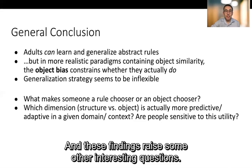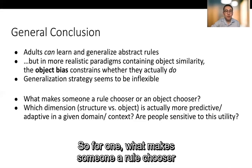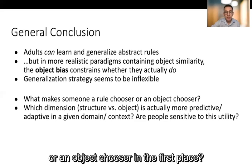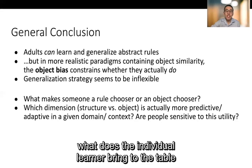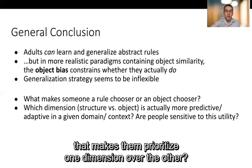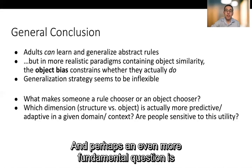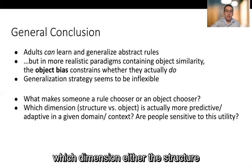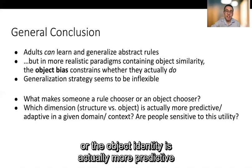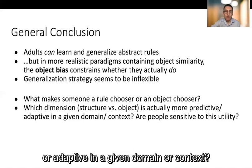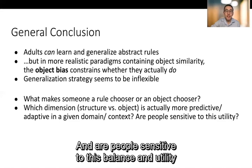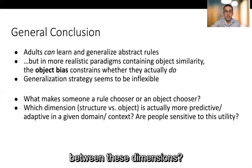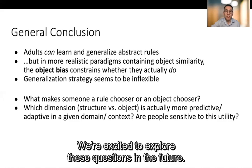And these findings raise some other interesting questions. So for one, what makes someone a rule chooser or an object chooser in the first place? In other words, what does the individual learner bring to the table that makes them prioritize one dimension over the other? And perhaps an even more fundamental question is which dimension, either the structure or the object identity, is actually more predictive or adaptive in a given domain or context? And are people sensitive to this balance and utility between these dimensions? We're excited to explore these questions in the future.